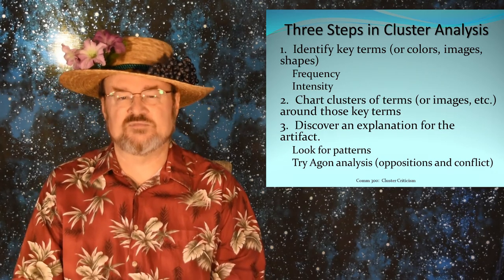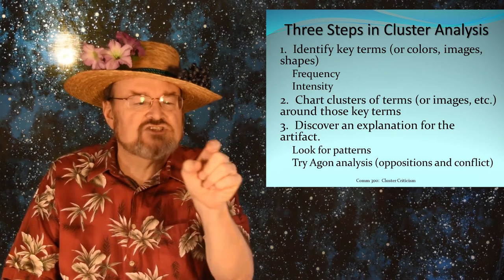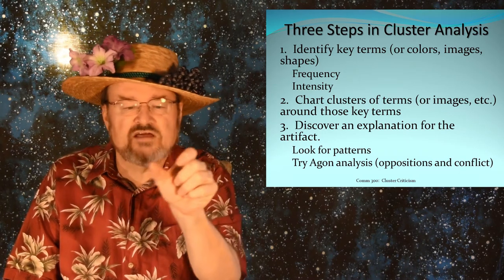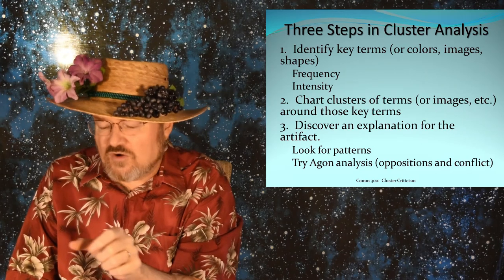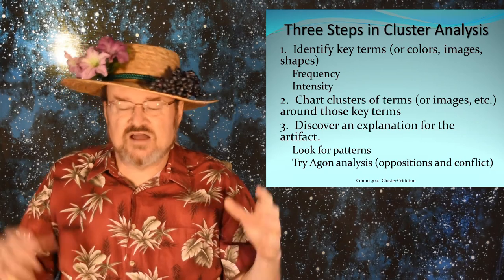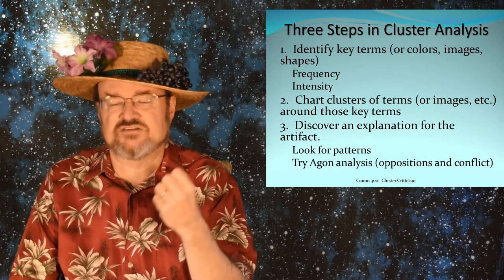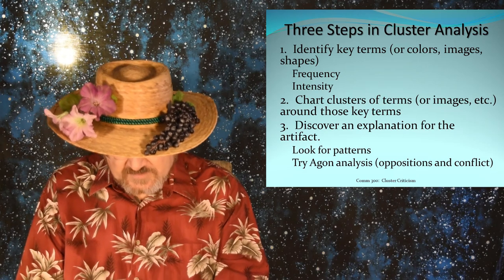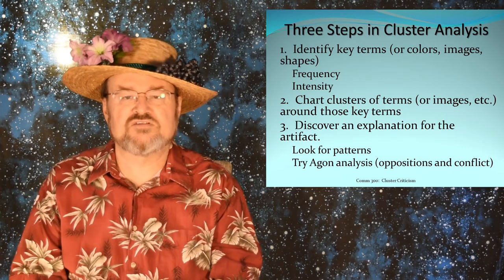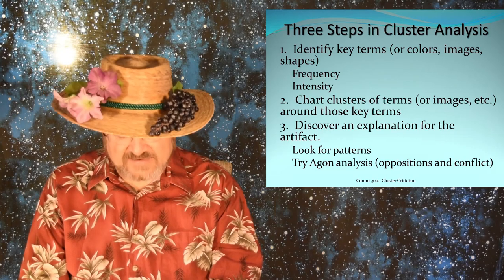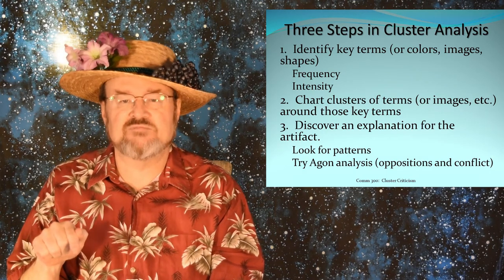Once we've identified the key terms, we go through the speech, find each key term, and chart — write down — all the other terms that are nearby. All of them. Then we go to the next instance of that key term and chart all the surrounding terms, until we've got all terms charted for that particular key term. Then we start over. Usually there are three, four, or five key terms that we look at. Once we've got these lists of associated terms around the key terms, that's when the third step comes in: we start discovering an explanation for the artifact, asking ourselves what are the patterns and what goes with what in the mind of the speaker.